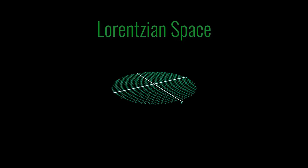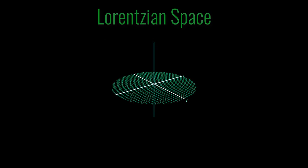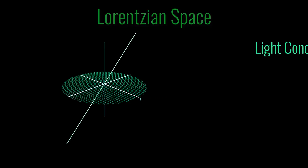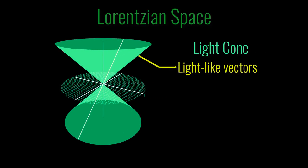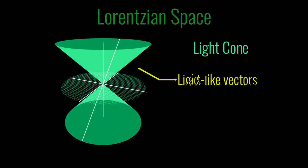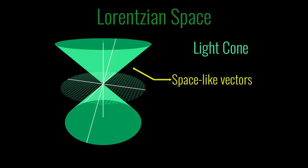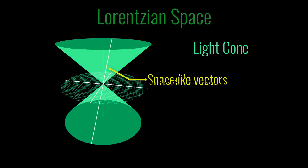If you take all the vectors of norm 0 this forms something called the light cone. So that tells you how light travels and the vectors outside here are called space-like and the vectors inside these cones are called the time-like vectors.